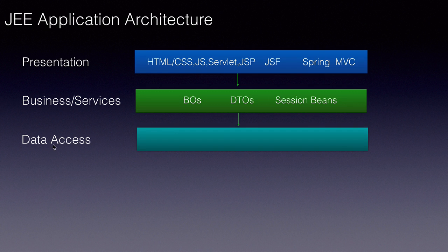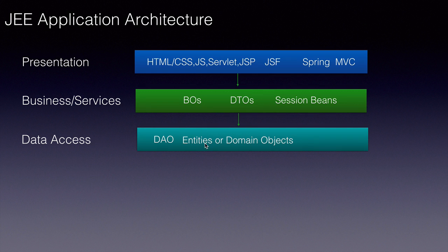The data access layer, as the name itself says, is the layer responsible for fetching the data required for our application as well as saving data into data stores. We call the classes at this layer DAOs, which stand for data access objects. We also create entities and domain objects which carry data back and forth, and we mark these entities using JPA annotations. Typically we use JPA to perform data access. JPA stands for Java Persistence API and it is a standard from Oracle to use ORM tools. ORM stands for Object Relational Mapping, and it makes our job as developers easy to perform database operations.